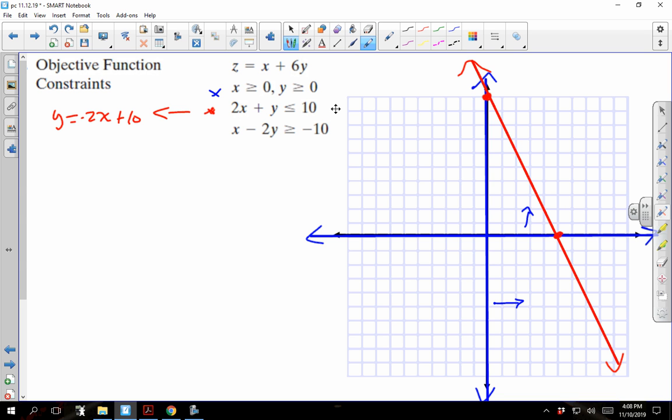And if I plug in 0, 0 just to test the points, I'm going to plug this into this equation and ask if 0 is less than 10. And since 0 is less than 10, that's true. We're going to go ahead and shade this side.